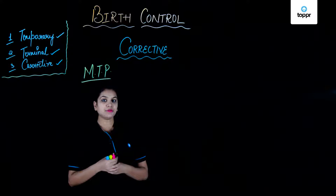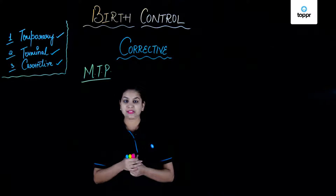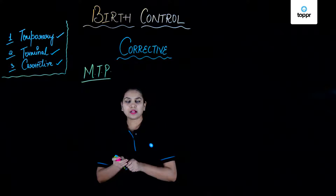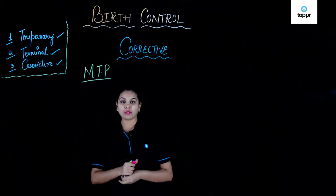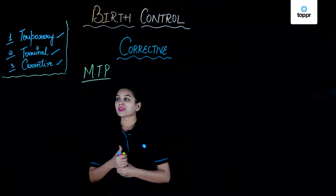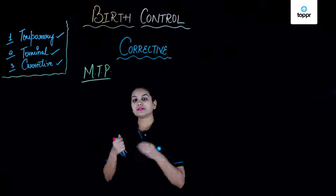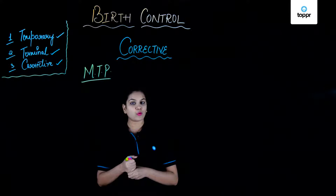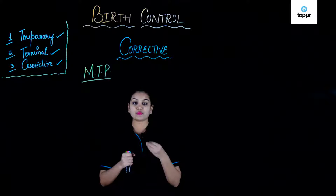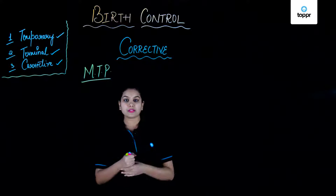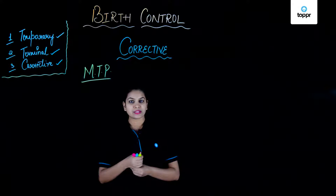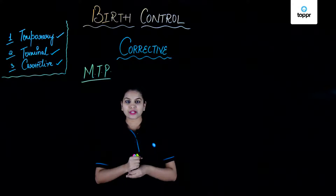In this lesson we learned about birth control methods. The first was the temporary method, including various commonly used approaches to avoid pregnancy. Next is the terminal method, where certain surgeries or sterilization can be done in males and females. Last is the corrective method — medical termination of pregnancy — which is possible under strict conditions even after a person has become pregnant.